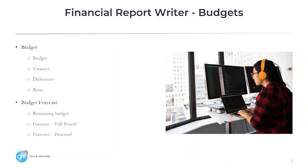Next, we have our budget forecast options, which are: Remaining Budget, which will provide the amount of budget remaining after deducting the actuals for a certain period. Forecast Full Period — this option assumes that the budgeted amount is entered on the first day of the reporting period and uses the budgeted values for the entire current period as well as for future periods; actuals are only included for prior periods. And Forecast Prorated, which provides a prorated look for partial periods as opposed to the Forecast Full Period option.